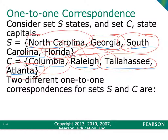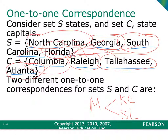If you find that a state has two capitals — like if Missouri had a capital of both Kansas City and St. Louis, which by the way neither of those are the capital of Missouri, but just go with it — that is bad because it is not going to one place. It's going to two different places, and that would not be a one-to-one correspondence.